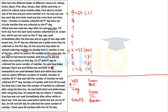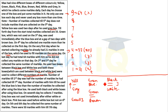Condition 8: He used two boxes between the black box and the white box, and both these boxes used between black and white were used to collect different numbers of marbles. So if one of them collects w marbles, the other collects x marbles, where w ≠ x.